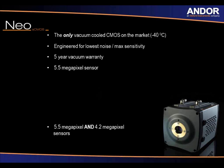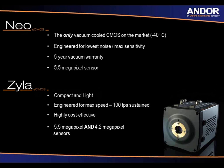Andor has two sCMOS cameras: the Neo sCMOS and the Zyla sCMOS. The Neo sCMOS has a 5.5 megapixel sensor and is the only vacuum-cooled CMOS on the market, cooled to minus 40 degrees. The Zyla is much smaller and comes in two variants: 5.5 megapixel and 4.2 megapixel sensors. The Neo is a 3-tap camera acquiring 30 frames per second sustained, whereas the Zyla is available as both 3-tap and 10-tap and USB 3, giving different variants depending on the speed required.